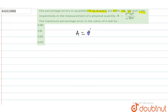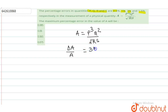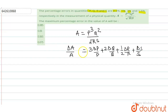A is given as pq³ divided by the square root of rs. Now applying the error concept, we can write: Δa/a = 3(Δp/p) + 2(Δq/q) + ½(Δr/r) + Δs/s. This is the concept of relative error. To convert into percentage error, we multiply by 100%.